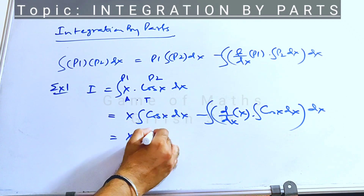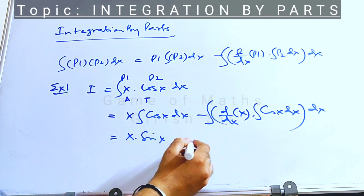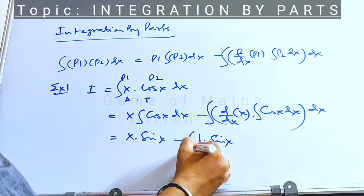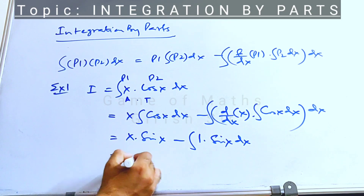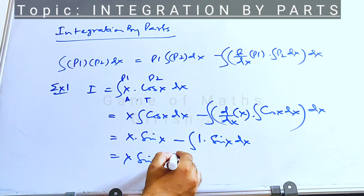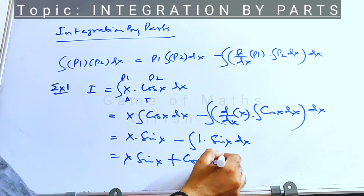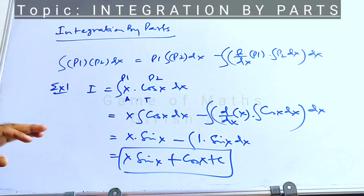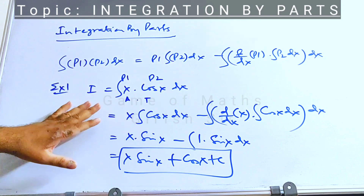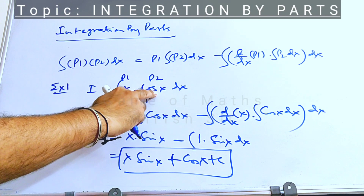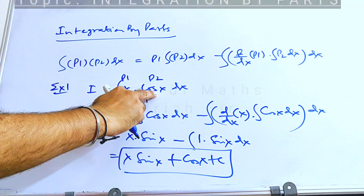The integral of cos x is sin x. Differentiating the algebraic part gives 1, and the integral of cos x is sin x, so that product is integrated again. The integral of sin x is minus cos x, which gives plus cos x, and we add the constant C. This is the final answer — it's a very useful technique to integrate a product of two functions.